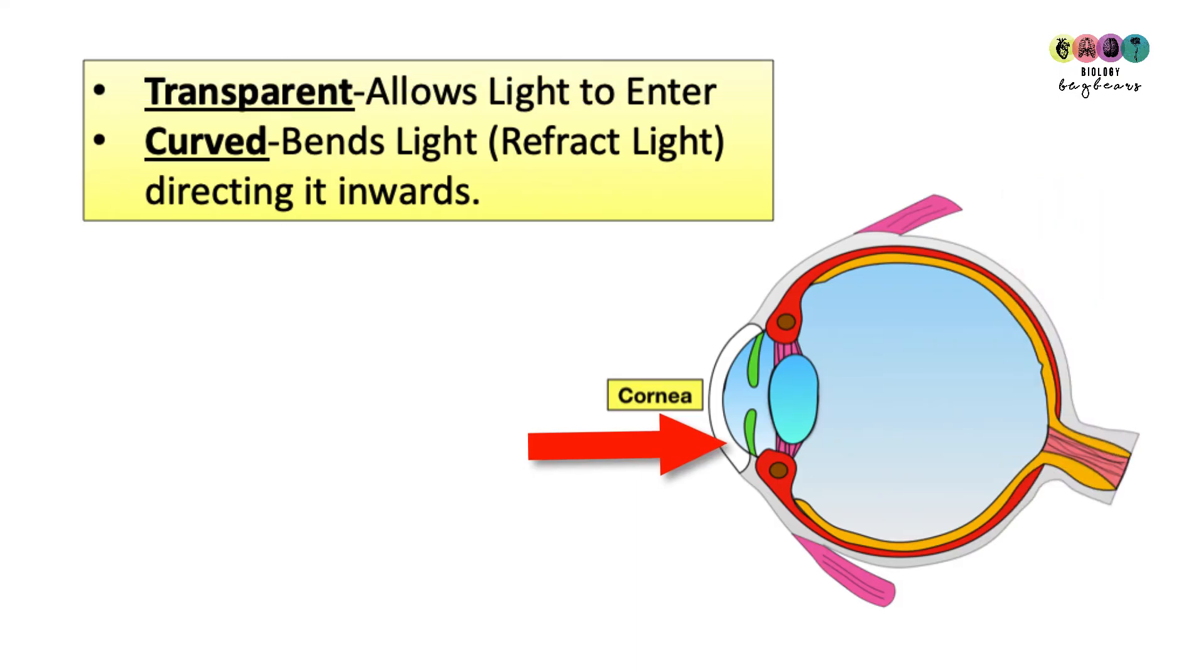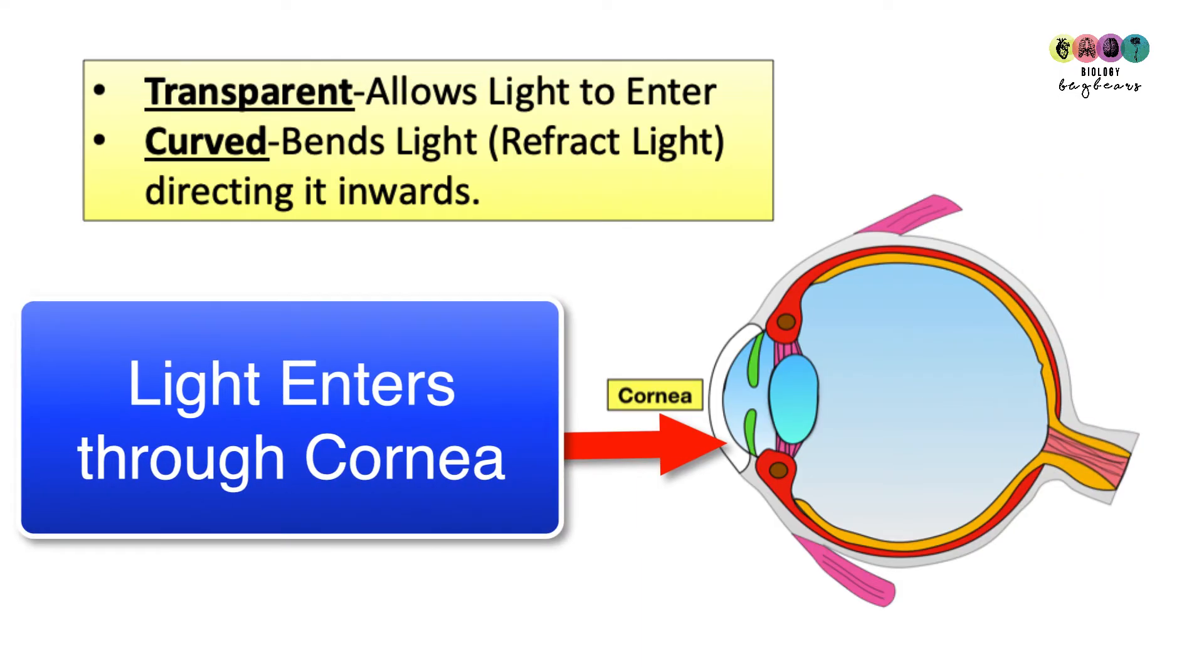So luckily at the front it becomes the cornea which is this transparent section that allows light to enter. Light enters through the cornea but the cornea is also curved which means that it bends the light. It refracts the light inwards into the eye which is really important.